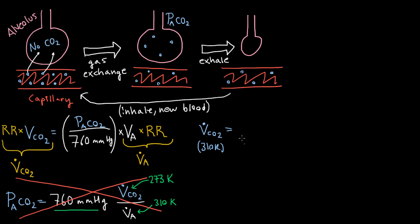Our ideal gas laws tell us that we just have to multiply by the ratio of the temperatures. And we'll see that the same gas at 310 degrees Kelvin will take more space than it would have at 273 degrees Kelvin. So let's replace this V̇CO2 with this new upgraded V̇CO2. And let's see what that gives us for the equation.